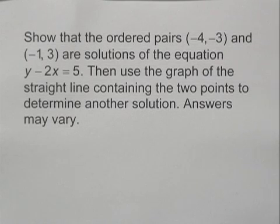Show that the ordered pairs (-4, -3) and (-1, 3) are solutions of the equation y minus 2x equals 5. Then use the graph of the straight line containing the two points to determine another solution. Answers may vary.